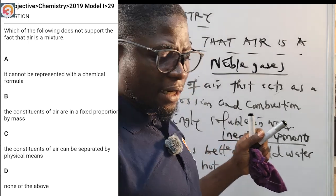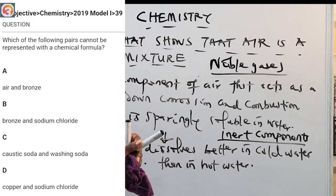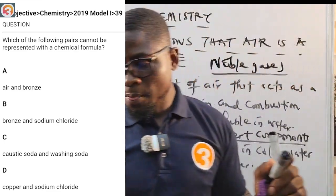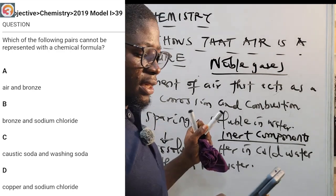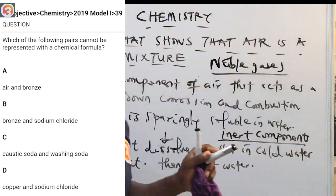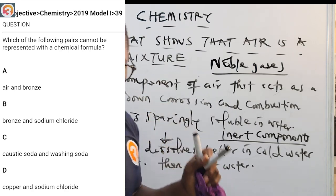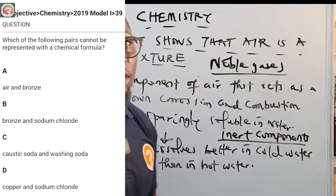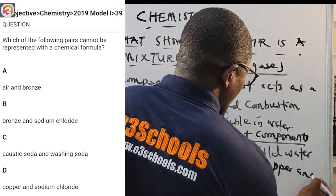Let's see another question: 2019 number 39. Which of the following pairs cannot be represented with a chemical formula? A: air and bronze. B: bronze and sodium chloride. C: caustic soda and washing soda. D: copper and sodium chloride.